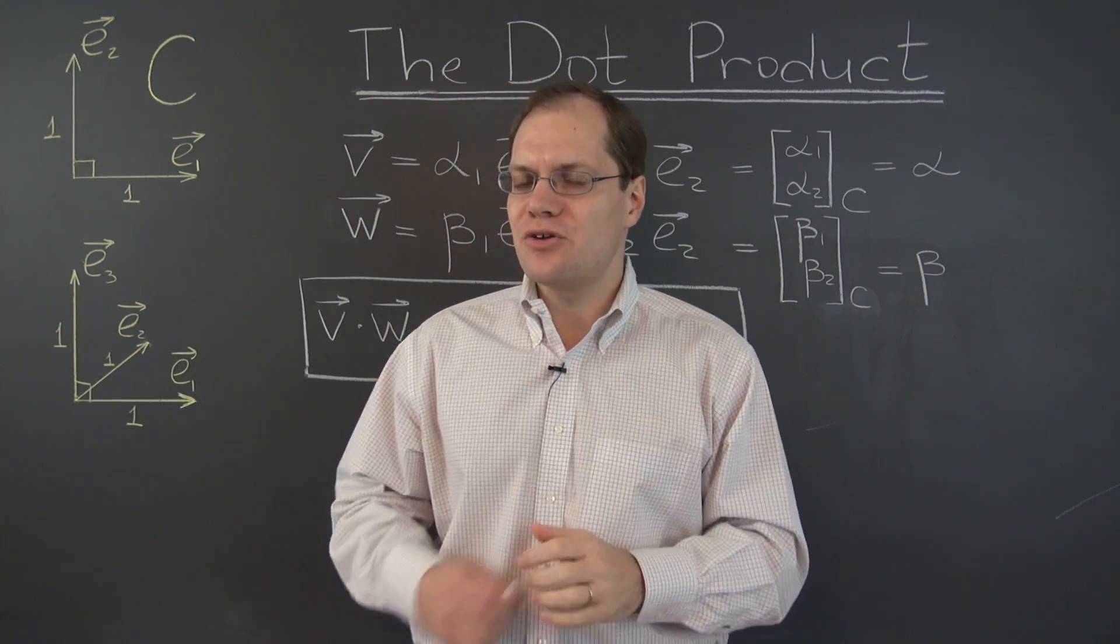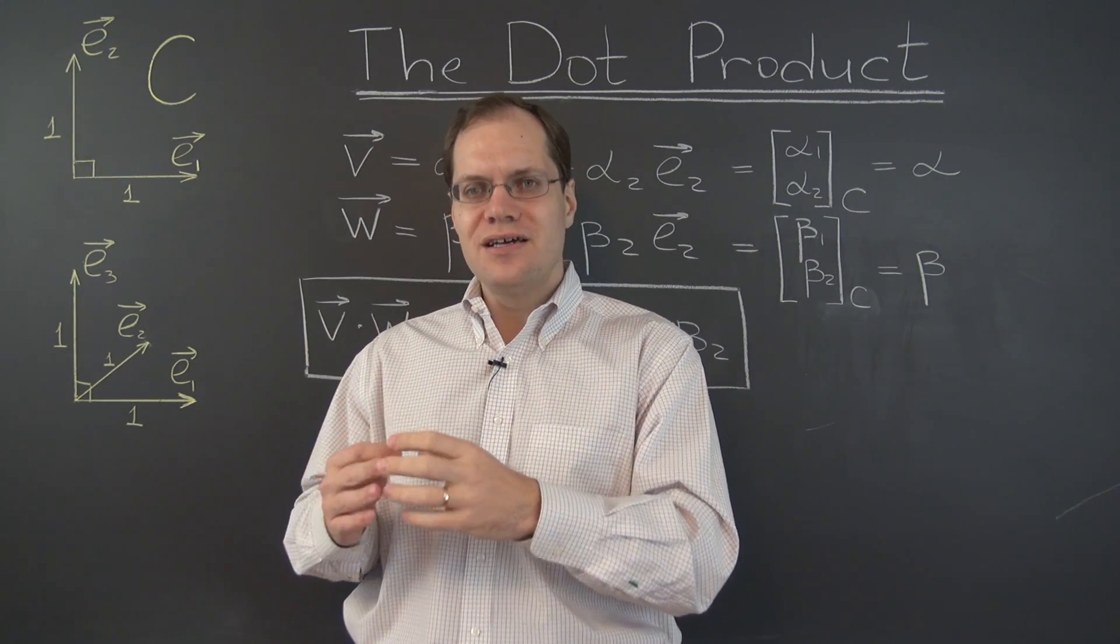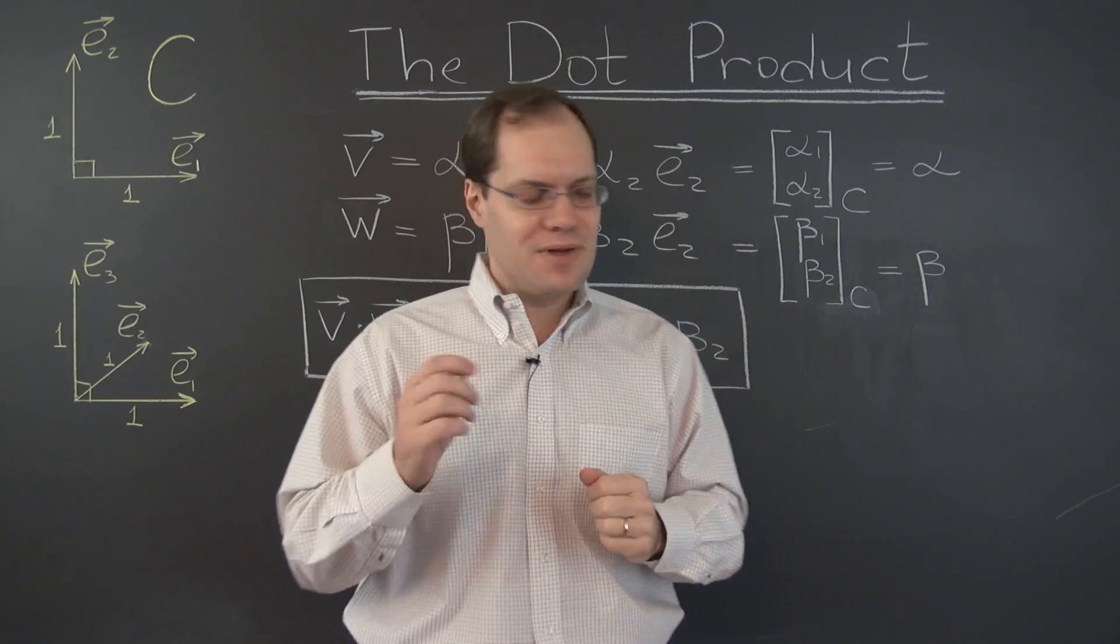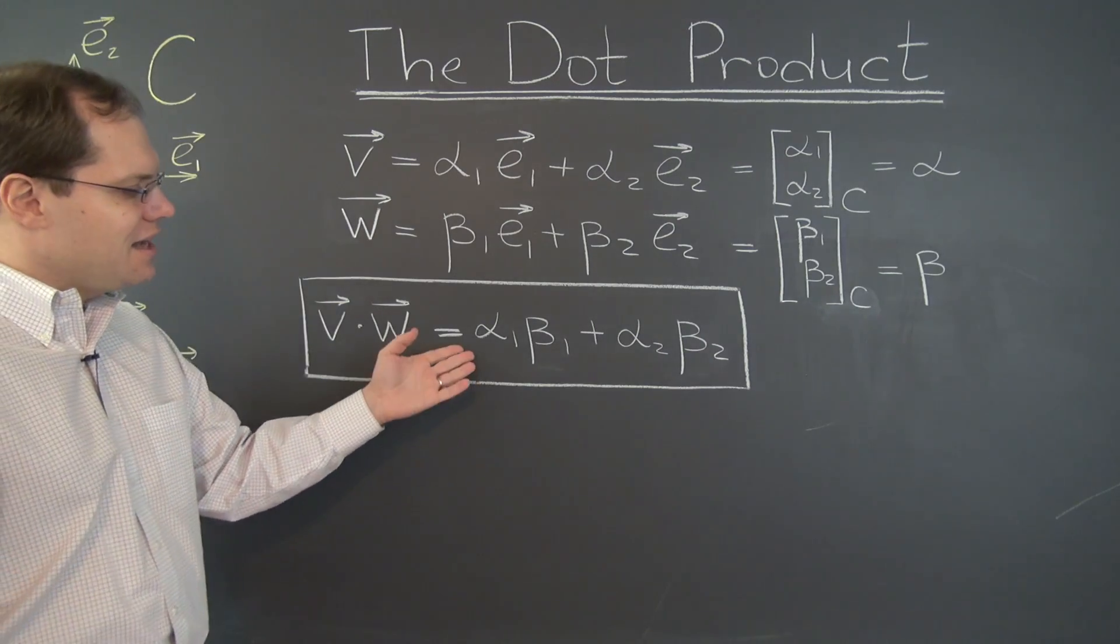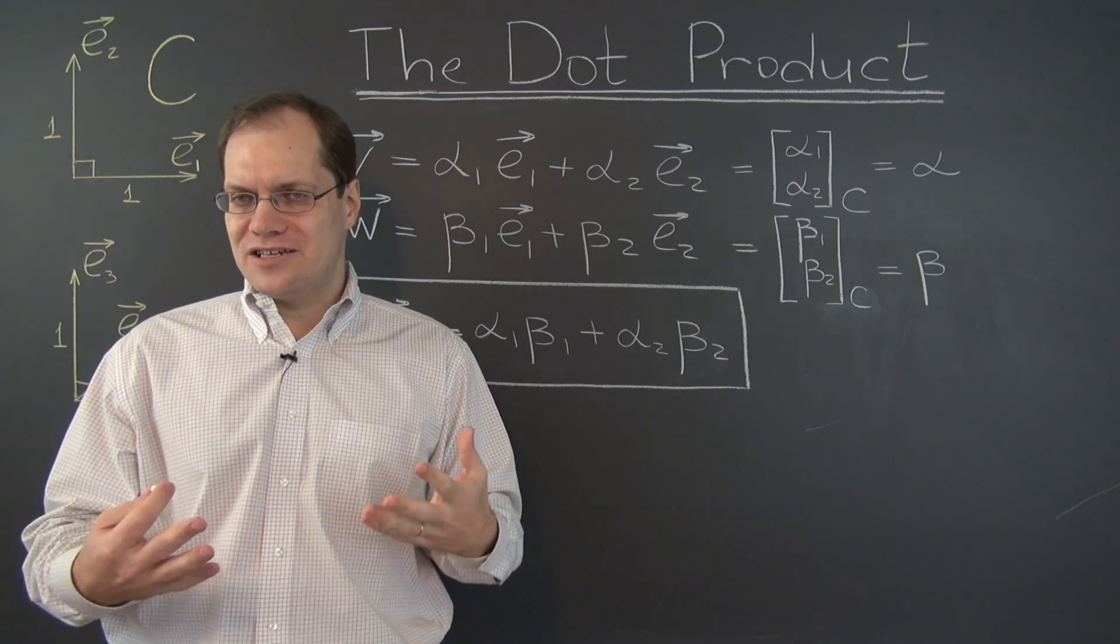Then the dot product of v and w, which is defined as the length of v times the length of w times the cosine of the angle between them, in the component space with respect to a Cartesian basis, has this expression alpha1 beta1 plus alpha2 beta2.